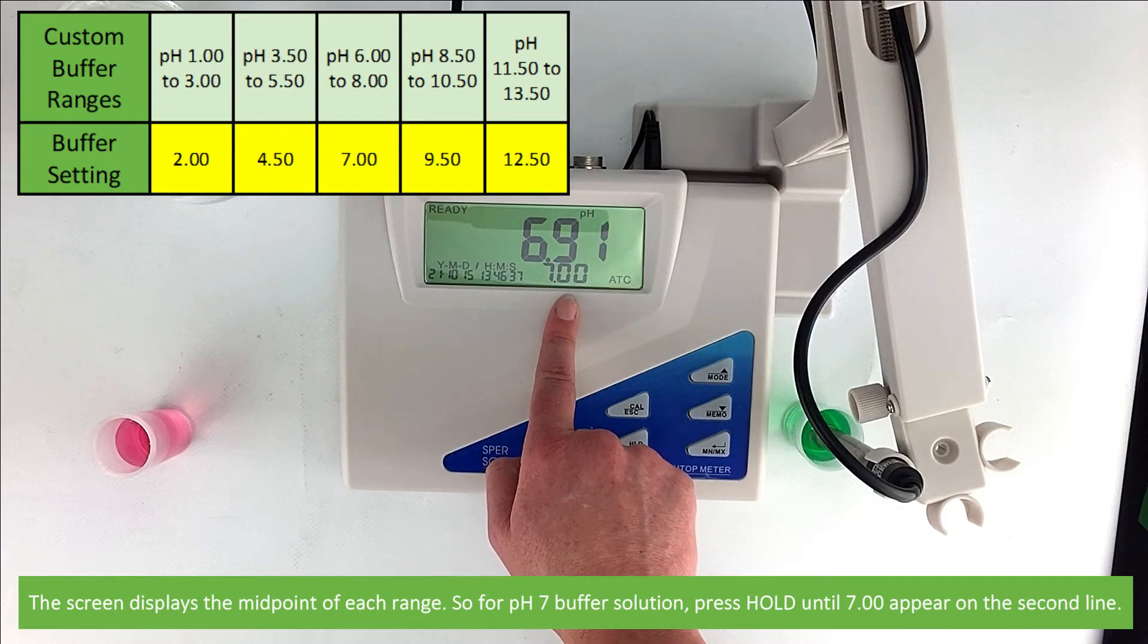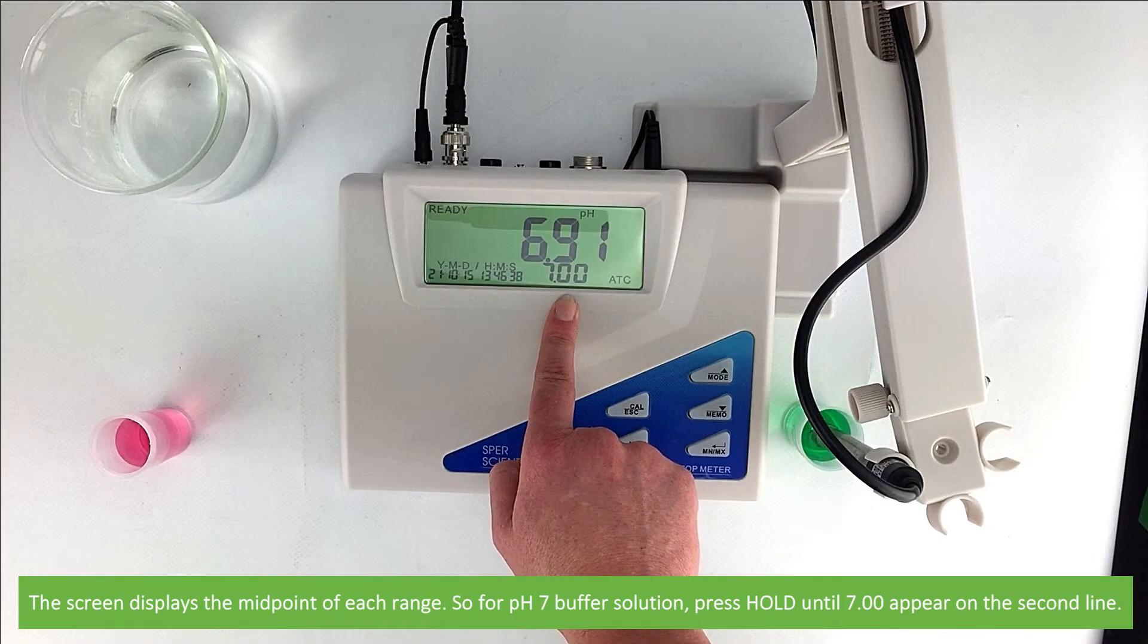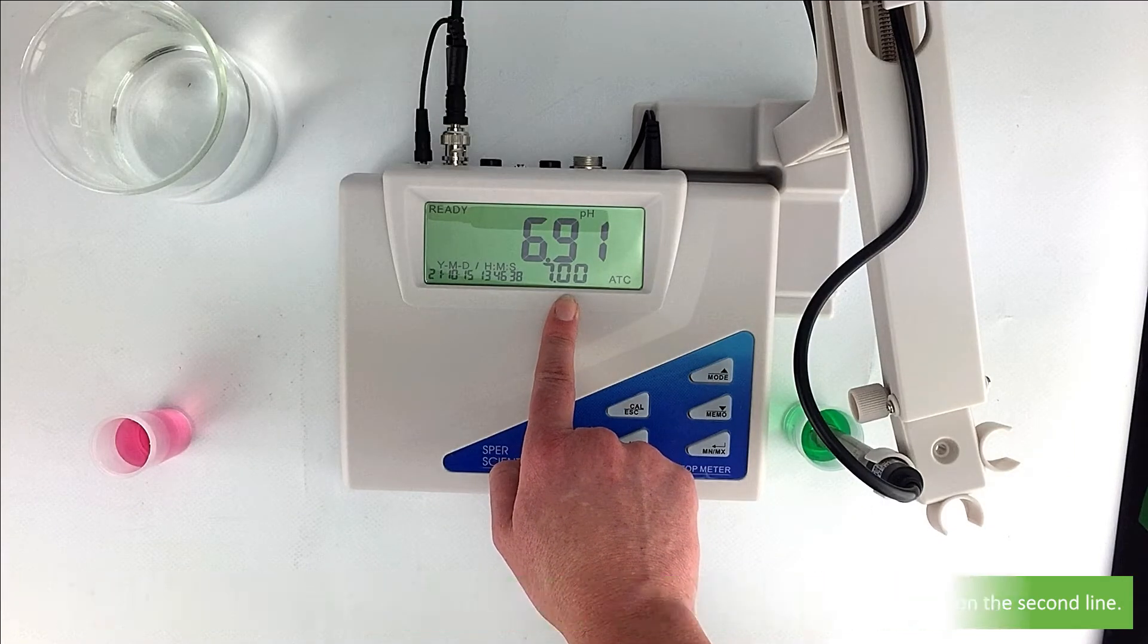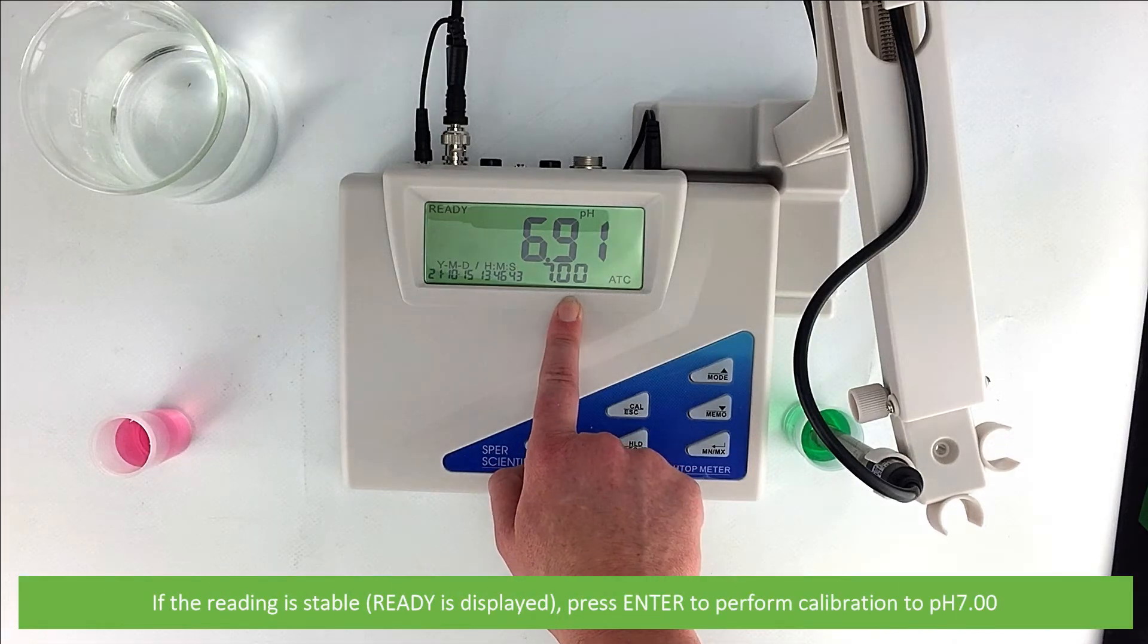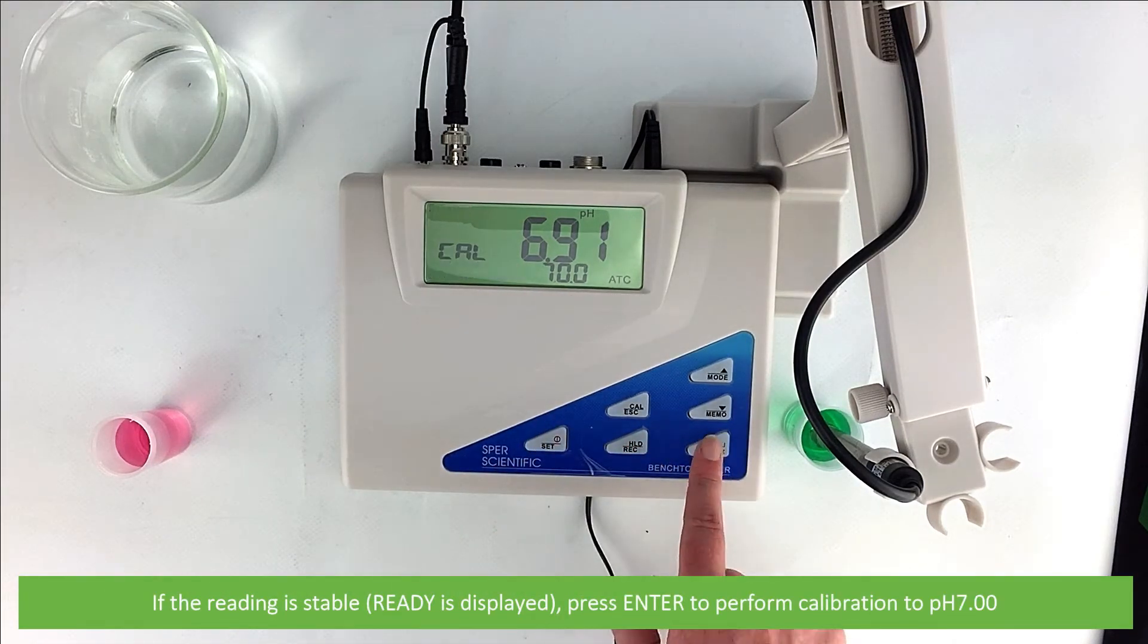So for pH 7 buffer solution, press hold until 7.00 appears on the second line. If the reading is stable and ready as displayed, press enter to perform calibration to pH 7. The screen will blink as calibration is occurring.